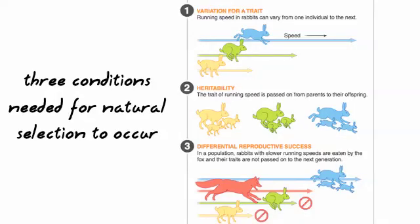Three things have to happen for natural selection to occur. First, you need variation of a trait — having all the same trait means no evolution will occur. Second, the trait must be heritable — if it's a weird mutation not in the genes, it can't be passed on. Third, there has to be differential reproductive success — the trait must help some individuals make more babies.